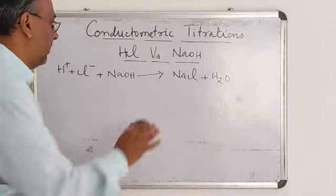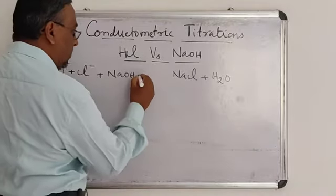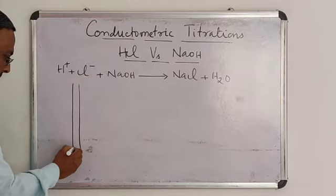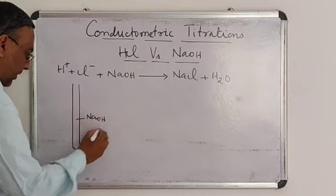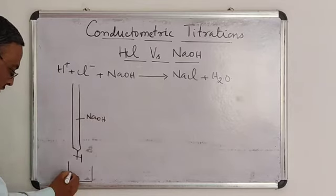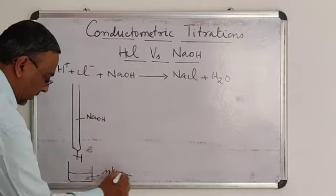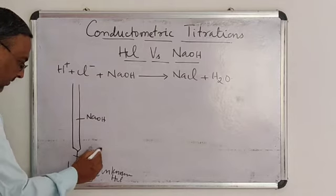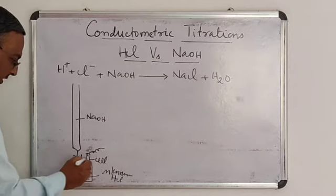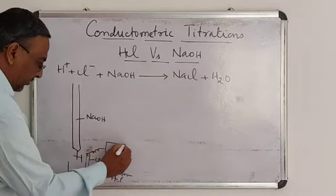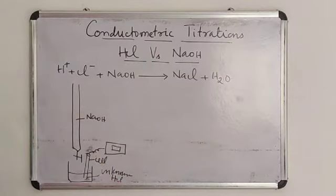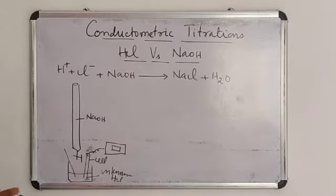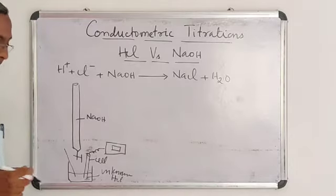How do we carry out this reaction? First, we take a given unknown quantity of hydrochloric acid in a beaker, in which a conductivity cell is immersed. This cell is connected to a conductivity bridge which gives a digital display of conductance. Sodium hydroxide is added from the burette, stirring the solution by means of a glass rod.